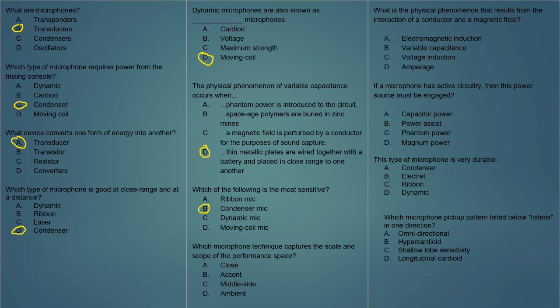Which microphone technique captures the scale and scope of the performance space? A, close; B, accent; C, middle side; or D, ambient? The answer is D — ambient micing captures the sound of the performance space. What is the physical phenomenon that results from the interaction of a conductor and a magnetic field? A, electromagnetic induction; B, variable capacitance; C, voltage induction; or D, amperage? The answer is A — electromagnetic induction. If a microphone has active circuitry, then this power source must be engaged: A, capacitor power; B, power assist; C, phantom power; or D, magnum power? They all sound equally unlikely, but the answer is C — phantom power. That's how you power a condenser microphone.